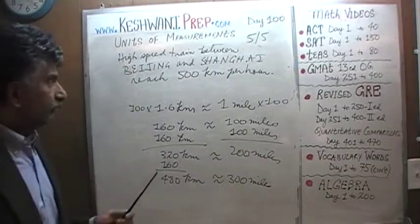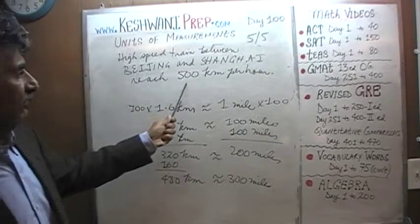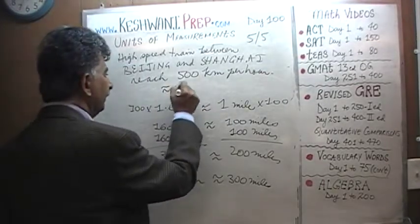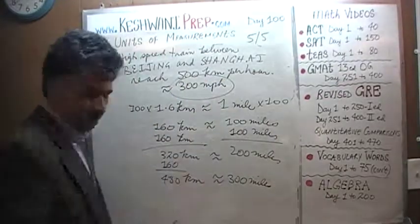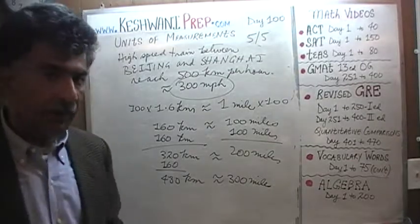Therefore, our question was, how fast is the train going? High-speed train between Shanghai and Beijing reached 500 kilometers per hour. 500 kilometers per hour is approximately 300 miles per hour. As you can see, they are not fooling around.